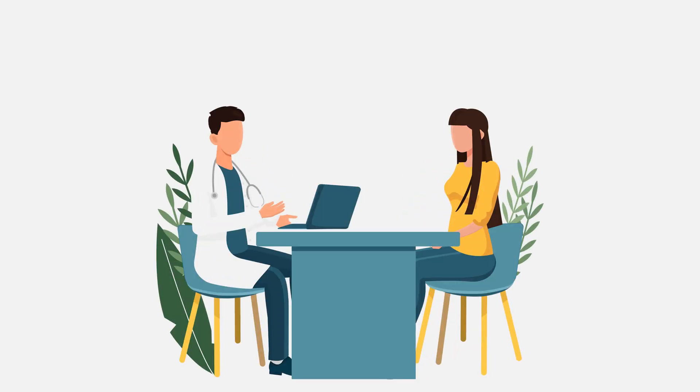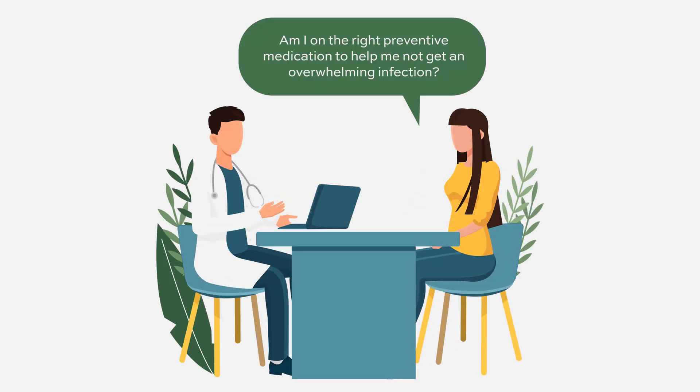The longer that your neutrophils are less than 1.0 or your white blood cell count is less than 1.0, over time you're more at risk for other types of infections like fungal infections. That's something to ask your health care provider about — am I on the right preventive medications to help me not get an overwhelming infection? Infection risk is really the biggest thing we think of.